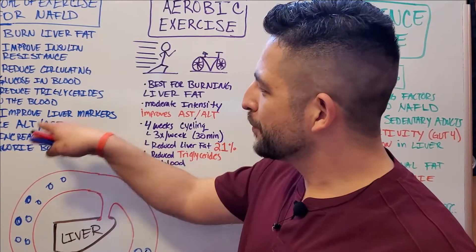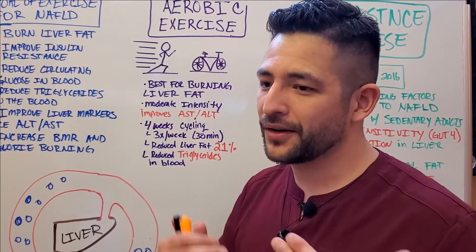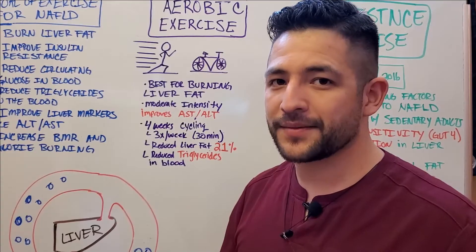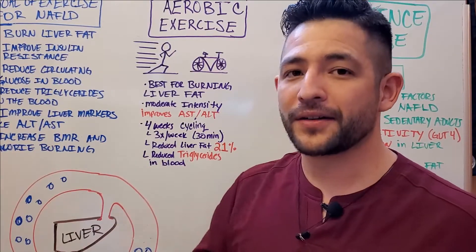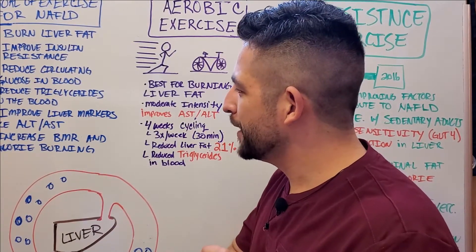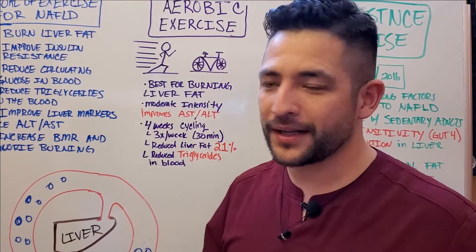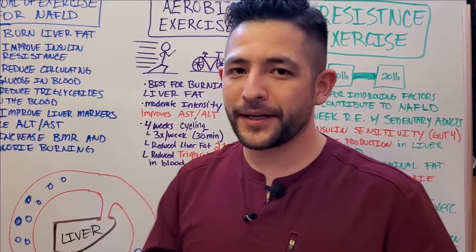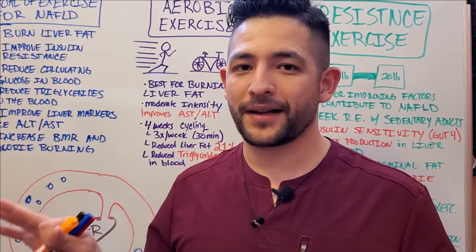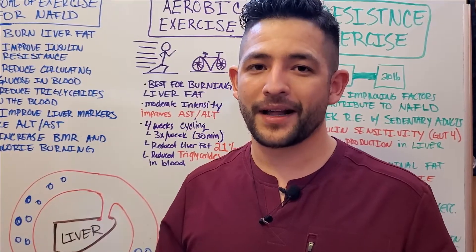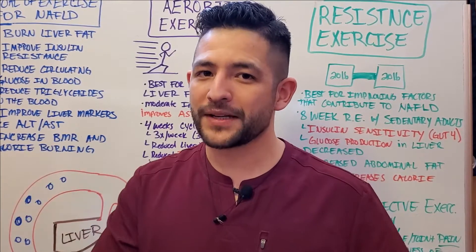We also want to improve liver markers like ALT and AST, which are liver enzymes that are sometimes elevated when people have fatty liver disease, often found in a blood test. And finally, we want to increase our basal metabolic rate and calorie burning. The basal metabolic rate is simply the amount of calories you burn just by breathing — literally sitting on your couch doing nothing. That's part of what your basal metabolic rate is.